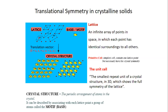We have now defined what a lattice is, what a motif is, what a crystal structure is, and what a primitive cell and a unit cell are. We are out of time, so we will stop here and continue in the next class.